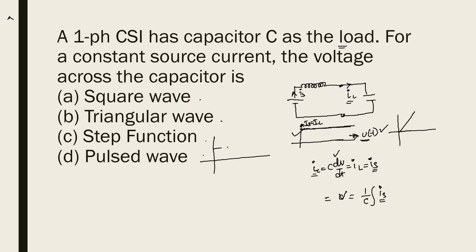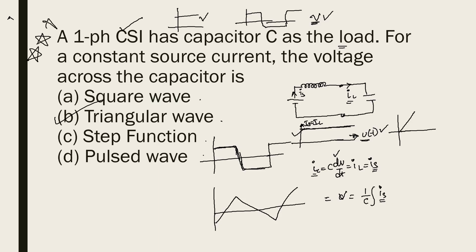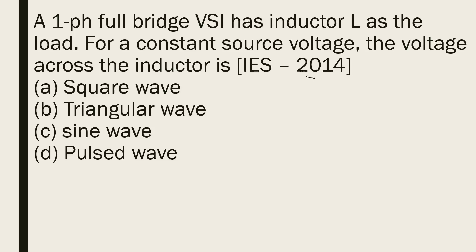The concept here is: in an inverter, a constant current looks like a rectangular wave because you require alternating current with constant magnitude. So if the current waveform is rectangular, then the voltage across the capacitor will be triangular. For a current source inverter, output current constant means output current is rectangular, and voltage waveform is triangular. This is a very important result asked in many PSU examinations.